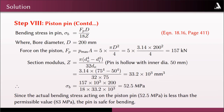Bending stress in the pin is checked using equation 18.16 (page 411): σb = FP × D / (18Z), where FP = Pmax × A = 5 × πD²/4 = 157 kN, D = 200 mm, and Z = section modulus of hollow pin (outer diameter 75 mm, inner diameter 50 mm) = 33.2 × 10³ mm³. Substituting, σb = 52.5 MPa, which is less than the permissible 83 MPa. Therefore the piston pin is safe in bending.